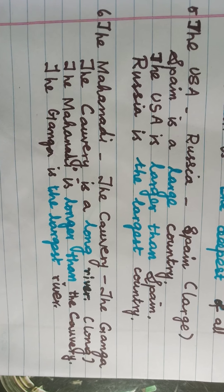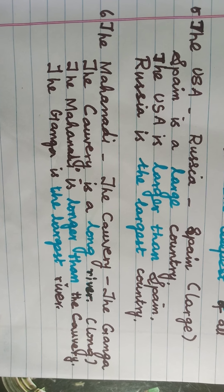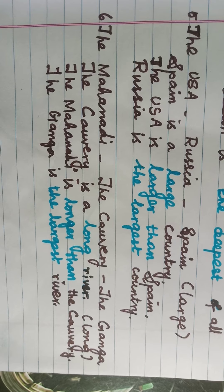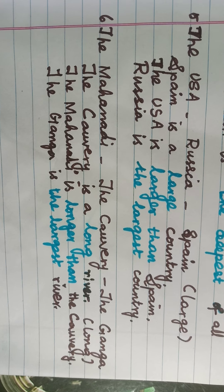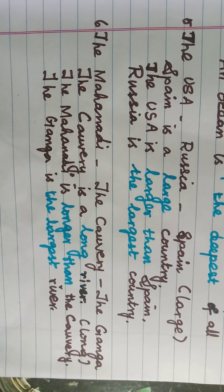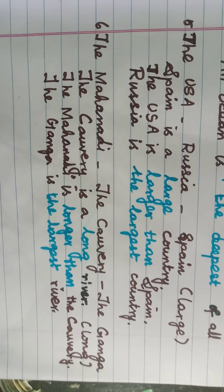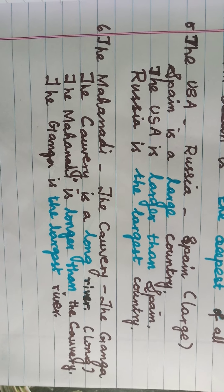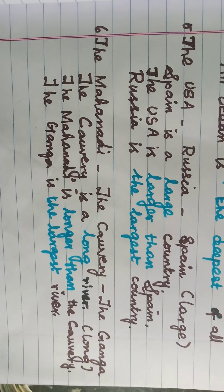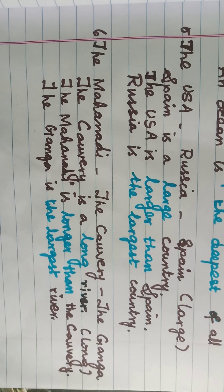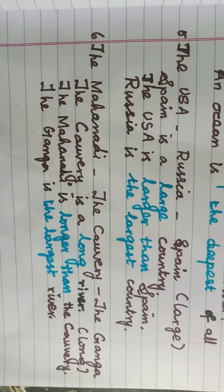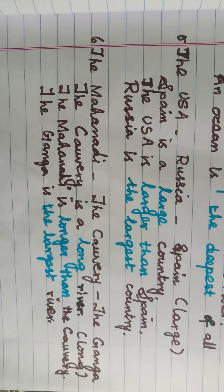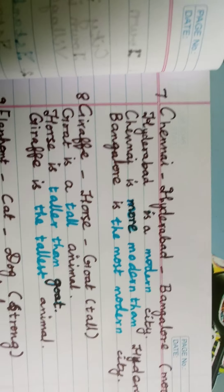Three rivers: the Mahanadi, the Cauvery, and the Ganga. The bracket word is 'long.' The Cauvery is a long river — positive degree. The Mahanadi is longer than the Cauvery — comparative degree. The Ganga is the longest river — superlative degree.